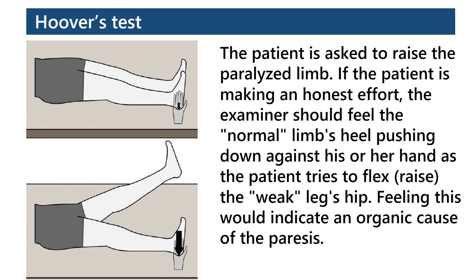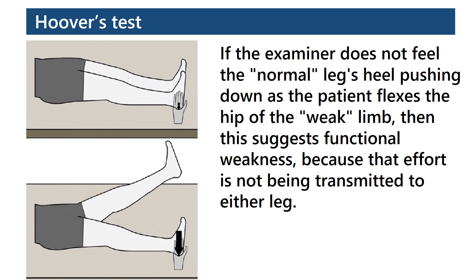Hoover's test. The patient is asked to raise the paralyzed limb. If the patient is making an honest effort, the examiner should feel the normal limb's heel pushing down against his or her hand as the patient tries to flex or raise the weak leg's hip. Feeling this would indicate an organic cause of the paralysis. If the examiner does not feel the normal leg's heel pushing down as the patient flexes the hip of the weak limb, then this suggests functional weakness because that effort is not being transmitted to either leg.